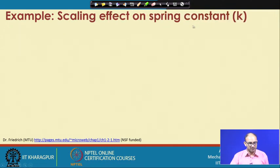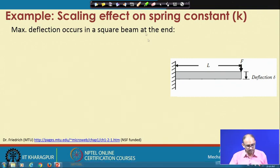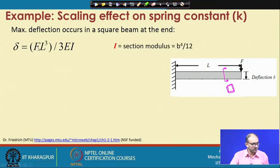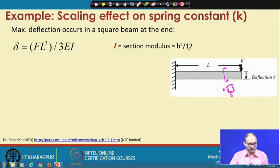Now let us look at the scaling effect on spring constant. We have a cantilever beam with a force F applied at the free end, producing some deflection. The maximum deflection for a square beam occurs at the free end and is given by δ = FL³/EI. The cross-section is square with dimension B×B, and the section modulus is I = B⁴/12.